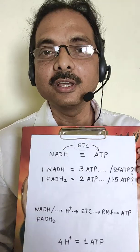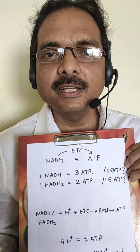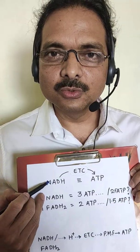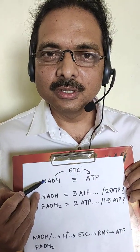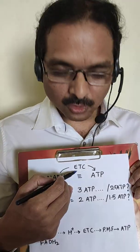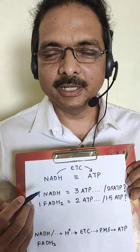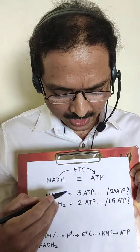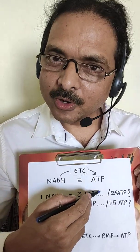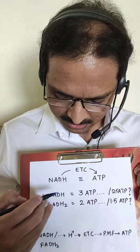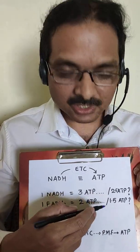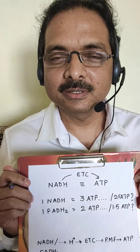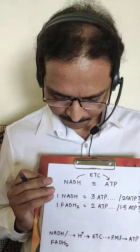In biological oxidation, we have studied that NADH and FADH2, through the electron transport chain, form ATP. Now, 1 NADH gives you 3 ATPs or 2.5 ATPs, and 1 FADH2 gives you 2 ATPs or 1.5 ATPs. This is a little dicey.